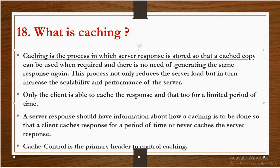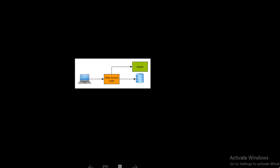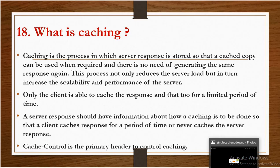Next question: what is caching? Caching is the process in which a server response is stored so that a cached copy can be used when required, with no need to generate the same response again. This process not only reduces the server load but also increases the scalability and performance of the server. Only the client is able to cache the response, and that too for a limited period of time. A server response should have information about how caching is to be done. Cache-Control is the primary header to control caching.